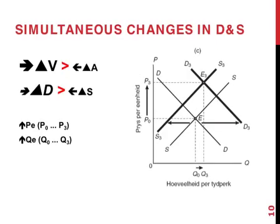It's also possible the other way around, where the increase in demand is bigger than the decrease in supply. In both cases, again, this pushes up the equilibrium price. But at equilibrium E3, the equilibrium quantity has now increased a bit because the increase in demand was proportionally bigger than the decrease in supply.